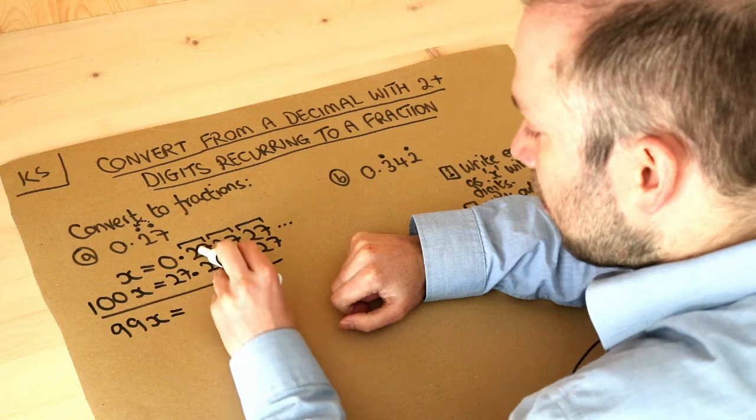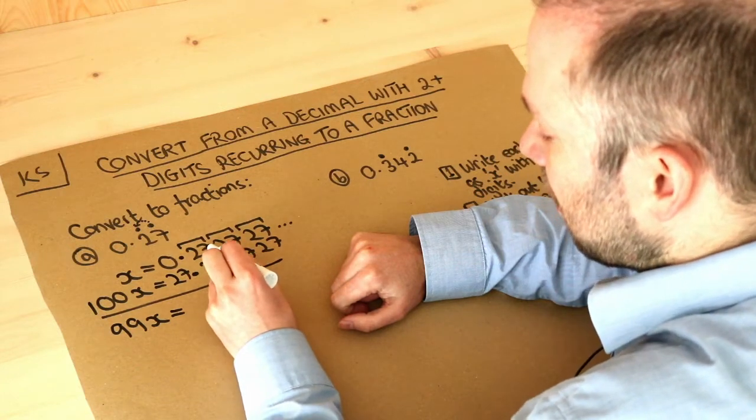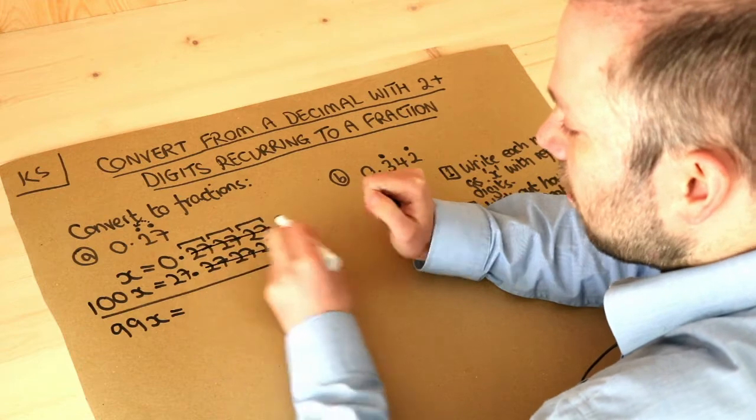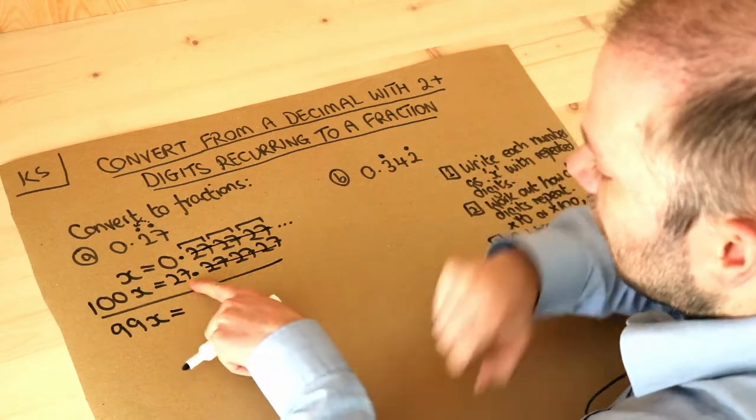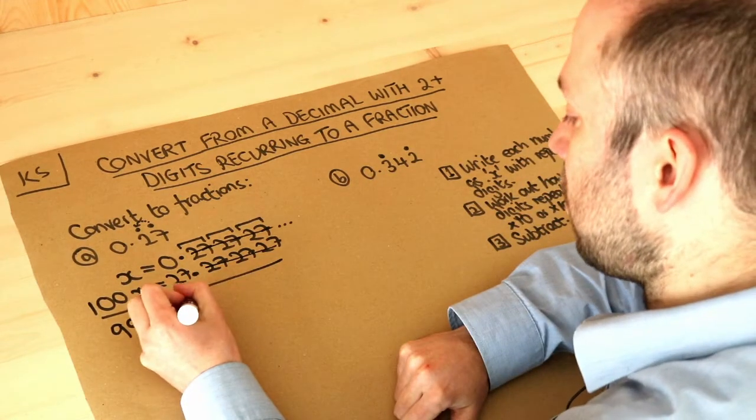And then what happens when we subtract these? Well can you see that because all these digits are the same when we do this minus this, 2 minus 2 is 0, 7 minus 7 is 0, 2 minus 2 is 0, that's just going to all cancel completely. So we're just left with 27 minus 0, which is 27.